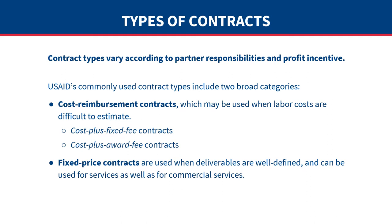USAID's commonly used contract types include two broad categories. The first type is cost reimbursement contracts, which may include cost plus fixed fee or cost plus award fee contracts. Milestones are not set at the beginning of the activity and USAID is heavily involved in its implementation. Cost reimbursement contracts may be used when labor costs are difficult to estimate. The other contract type, fixed price contracts, is often used for services and also used to purchase and install equipment or to purchase goods or supplies. Under fixed price contracts, the agency is not extensively involved in activity implementation.